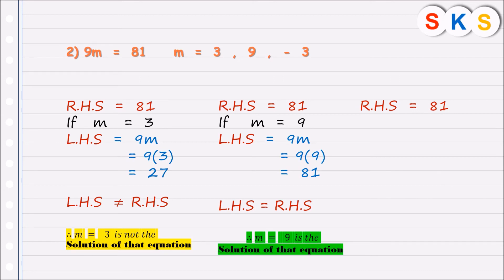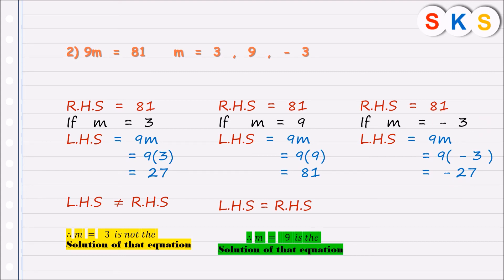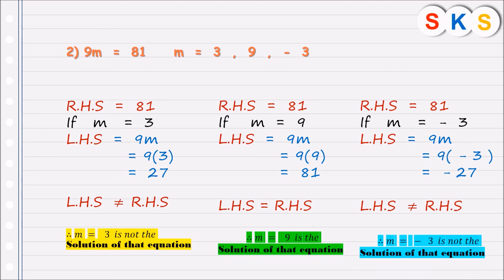For m equals to minus 3, we substitute into the left hand side: 9 into minus 3 is minus 27. The right hand side is 81 and the left hand side is minus 27, so LHS is not equal to RHS. This value does not make both sides equal. Hence, m equals to minus 3 is not the solution of that equation.